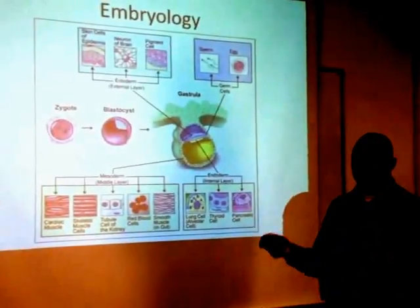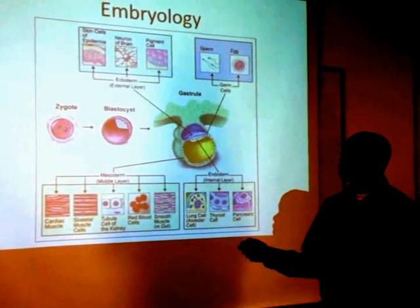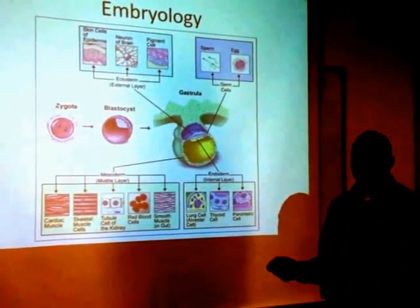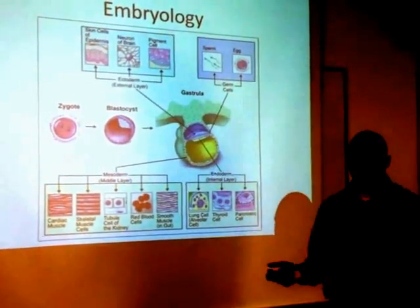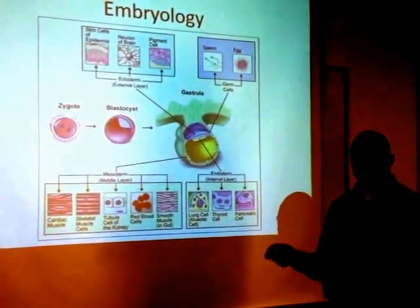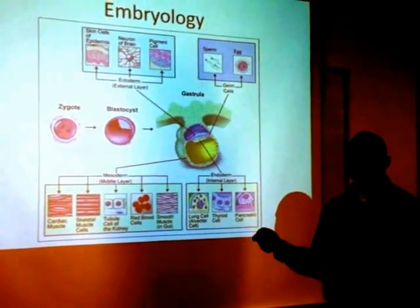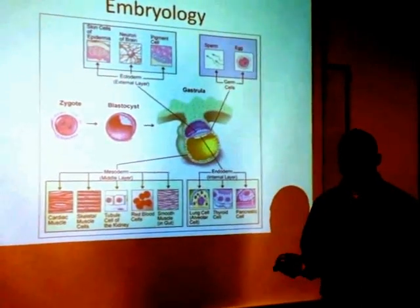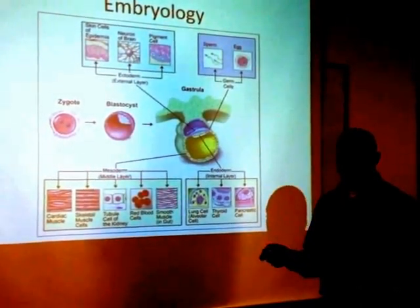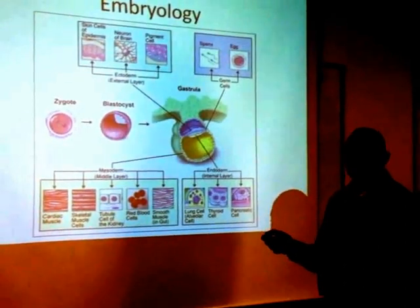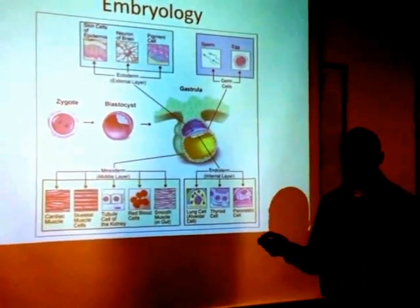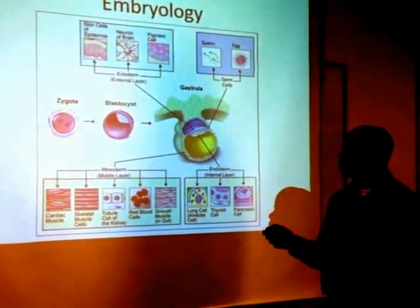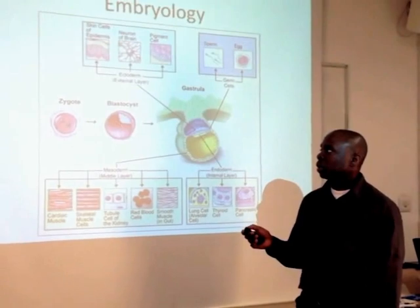Basically what we start off with is a zygote. The zygote comes from a combination of the dad's sperm and the mum's egg. From the zygote, we have a series of cell divisions going 2, 4, 8, and then 16. When we get to 16, we have what's called the morula. From the morula we divide again to 32. At 32, something quite unique happens — we form a cyst, a fluid-filled cavity in the middle of all these cells. That gives us the term blastocyst, at the 32-cell stage.